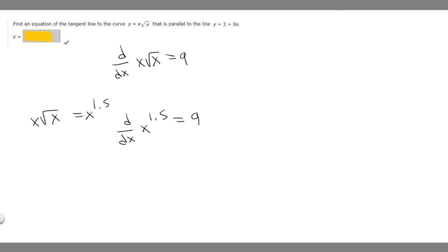Let's find the derivative of this. What we want to do is move our 1.5 down, 1.5x, and then subtract 1 from our exponent. So we set that equal to 9. And then if we divide both sides by 1.5, we'll get x to the 0.5 equal to 6.